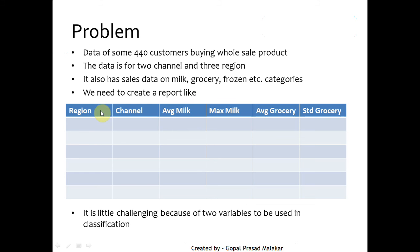First, you have to use classification based on two variables. Second, you are not looking for the same statistic for every variable. For milk you are looking at average and max, whereas for grocery you are looking at average and standard deviation. So you are demanding different statistics for different variables based on these two classification variables.